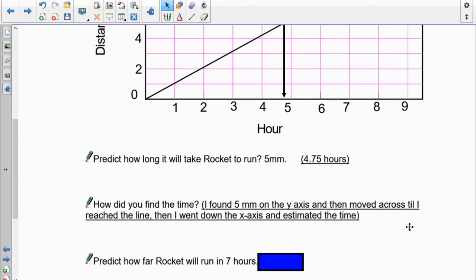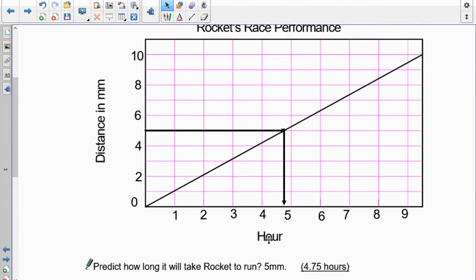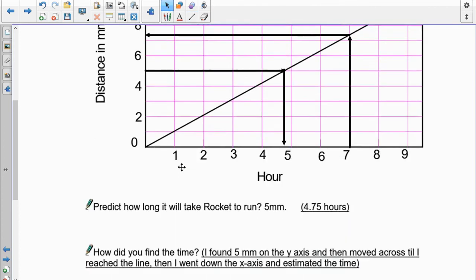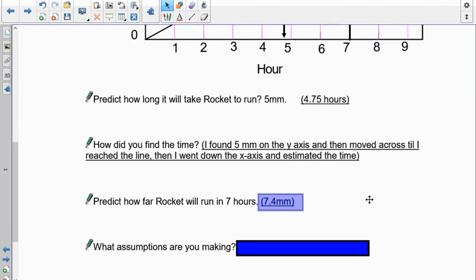So, how far will Rocket be after seven hours? So, now we're talking about doing it the other way. We started with distance first. Now, we're going to work with this one here. So, going to seven hours, right there. We're going to go straight up. And we're going to meet the graph, right there. And then we're going to grab the graph. And we're going to go that way. And you'll see that we reach, there's seven millimeters. Sorry, six millimeters. Here's seven. Here's 7.5. So, I'm guessing somewhere around 7.4 millimeters.